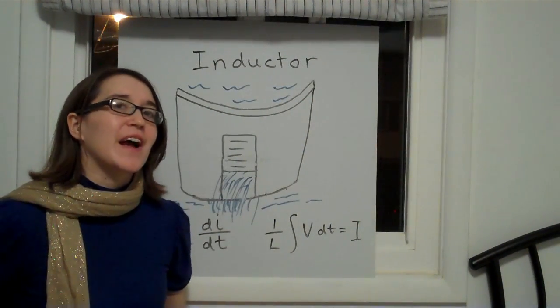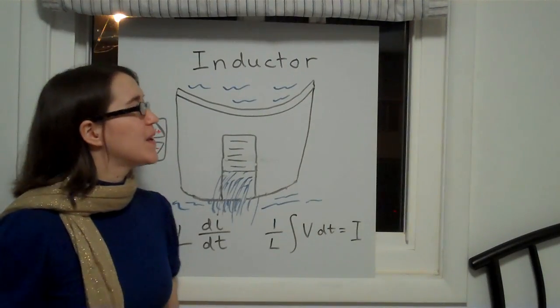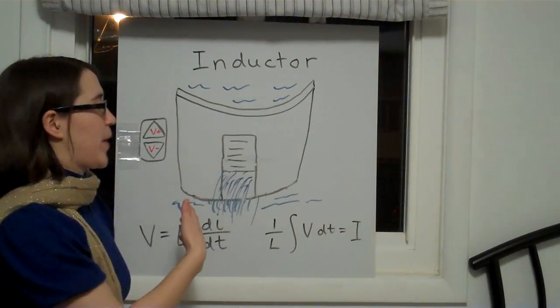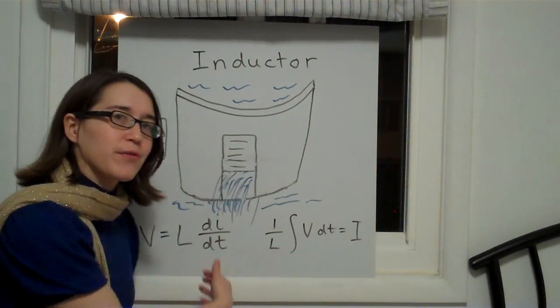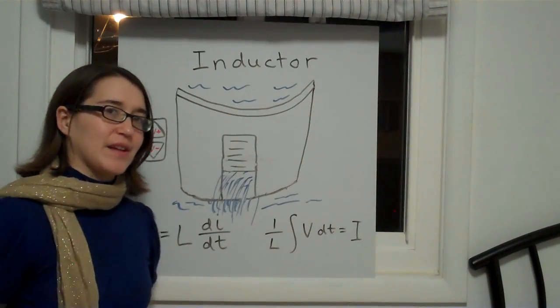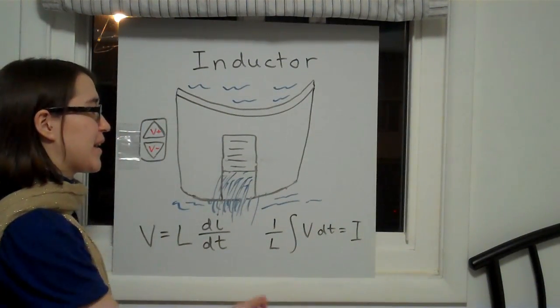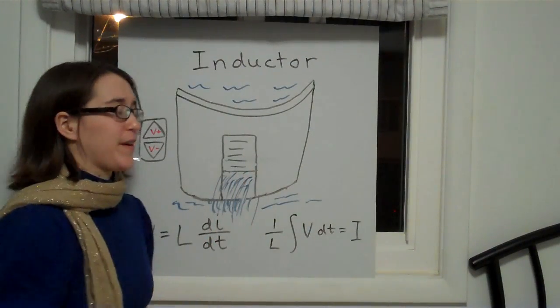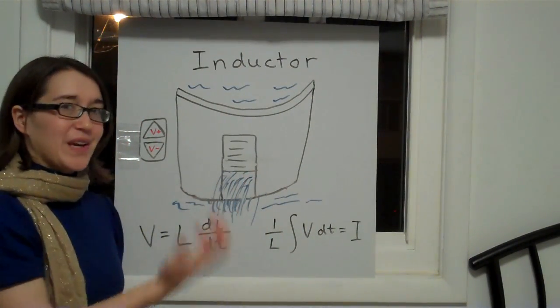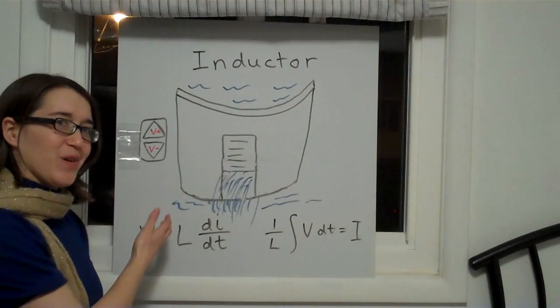We have another analogy for the inductor. It's not quite perfect, but it gets the point across. Think of it as a dam that's holding back water, and the water flowing through at the bottom is analogous to the current through the inductor. And there's a door controlling the flow of water, and that is controlled like a garage door by a remote control.